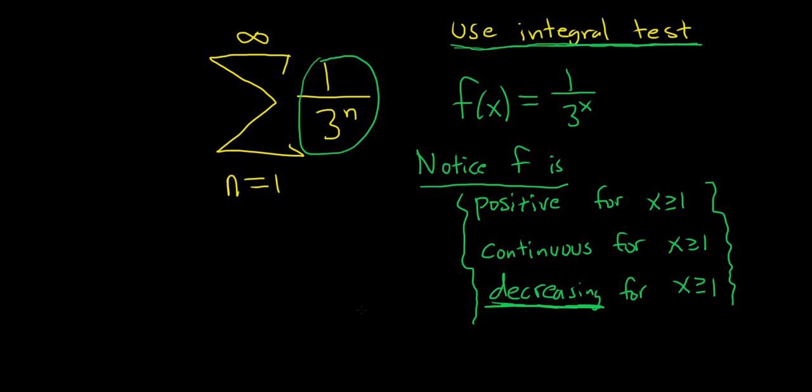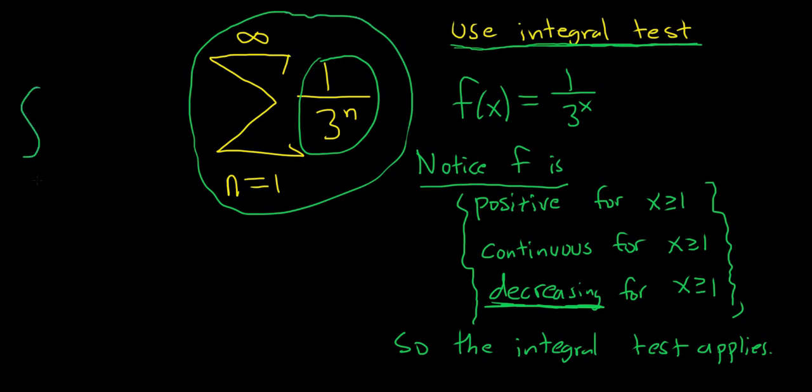Okay, so now I suppose we have to use the integral test. So the integral test applies. And so what the integral test says is if you have these conditions, then this infinite sum and this improper integral will either both converge or they'll both diverge. So what you do now is you look at this integral. If this integral converges, then your series converges. If this integral diverges, then your series diverges.